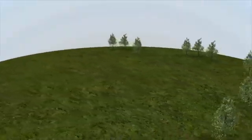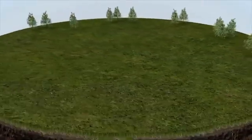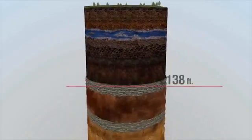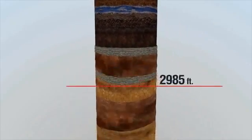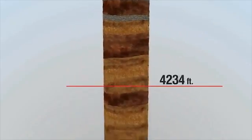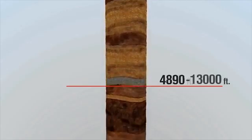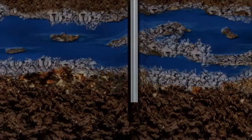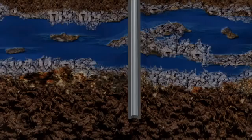Shale reservoirs are usually one mile or more below the surface, well below any underground source of drinking water, which is typically no more than 300 to 1,000 feet below the surface. Additionally, steel pipes, called casing, cemented in place, provide a multi-layered barrier to protect freshwater aquifers.